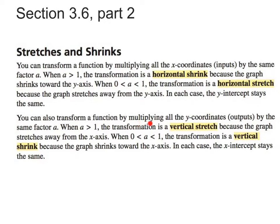You can also transform a function by multiplying all of the outputs — the y-coordinates — by the same factor. When you have a value greater than 1, the transformation stretches vertically, because the graph stretches away from the x-axis. When 0 is less than a and a is less than 1, the transformation is a vertical shrink, because the graph shrinks towards the x-axis. In each case, the x-intercept stays the same.